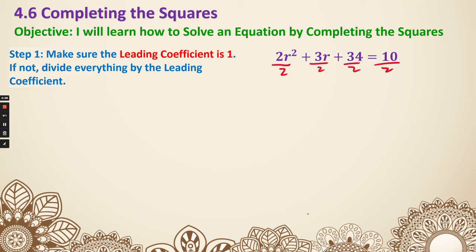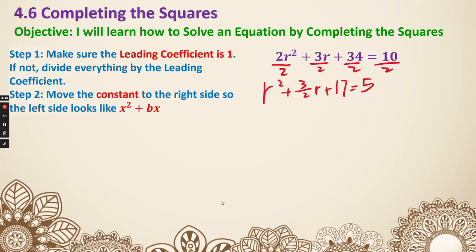After dividing by 2, we have r squared plus 3 halves r plus 17 equals 5. Step 2: move the constant to the right side so the left side looks like x squared plus bx. The constant is 17, so we subtract 17 from both sides, giving us r squared plus 3 halves r equals negative 12.